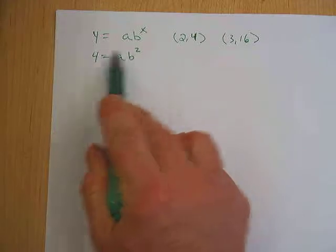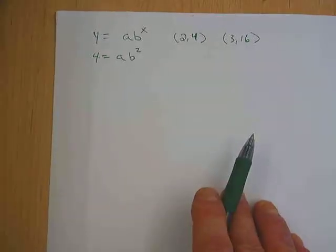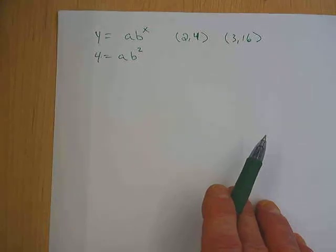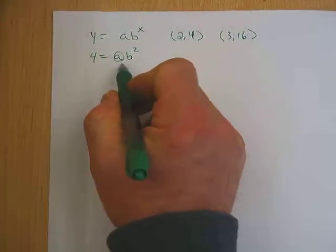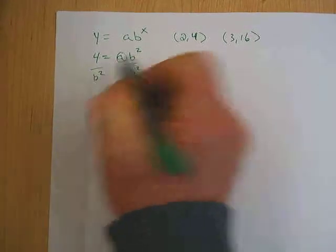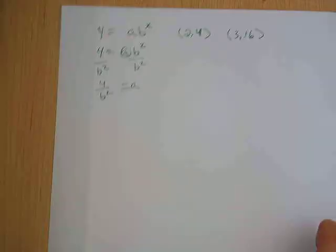So I took this 4, plugged it in for y, I took this 2, and plugged it in for x. First step is to re-solve for a. And I'm going to re-solve for a by dividing by b squared. So I get a equals 4 over b squared.